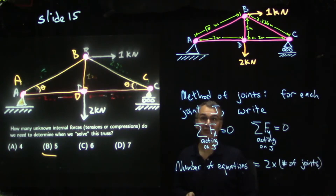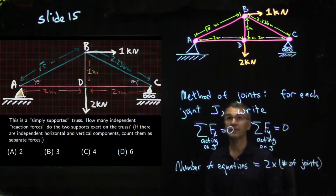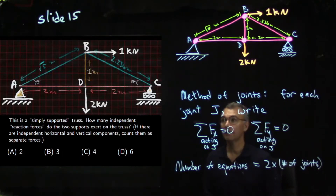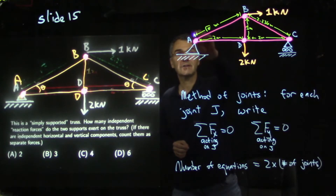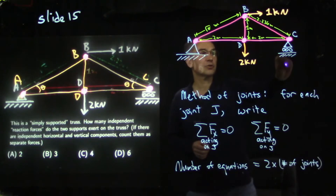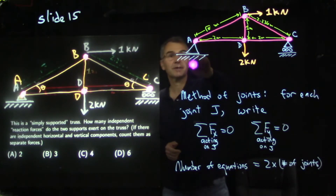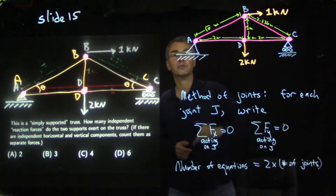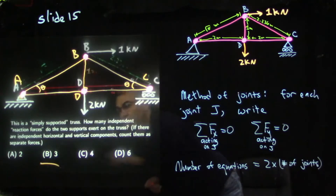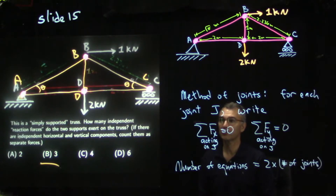There will also be some reaction forces to solve for — we have to figure out what the ground does to the truss to keep it in equilibrium. This is a simply supported truss: it has a roller support on one far end and a pin or hinge support on the other far end. The pin support at A can exert both a vertical and horizontal force. The roller support at C can exert only a vertical force. So we have three reaction forces total.